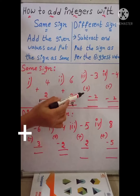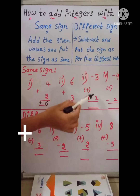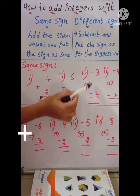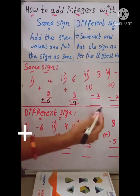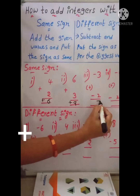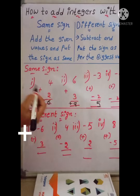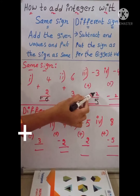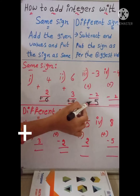The third example is minus 3 minus 2. These two are negative values, so just simply add these two values: 3 plus 2 equals 5. What about the sign? These two numbers are negative values, so put the sign as negative, giving us negative 5.